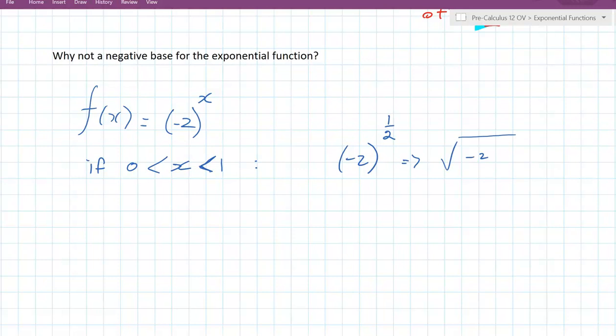So now, the extension question. Why not a negative base for the exponential function? Remember that b has to be greater than 0. So it can't be negative value. Well, let's go through some examples.